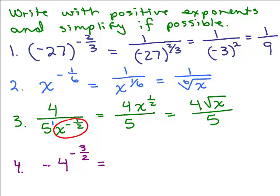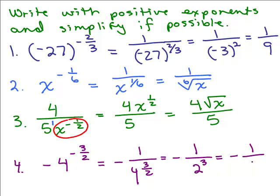Last one: negative 4 to the negative 3 halves power. The base is only 4 — the minus sign is out in front. So we have a minus sign, and 4 to the negative 3 halves means 1 over 4 to the positive 3 halves. The square root of 4 is 2, then we cube it: 2 cubed is 8. So the answer is negative 1 over 8.